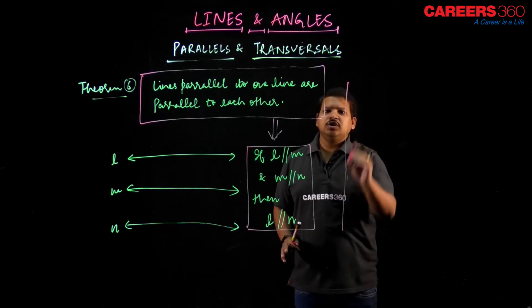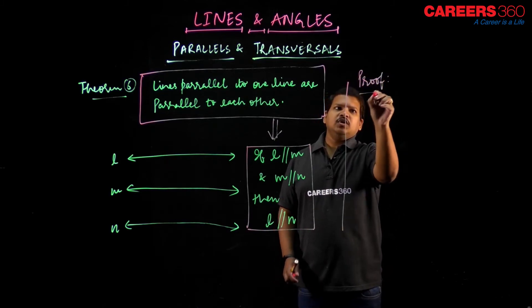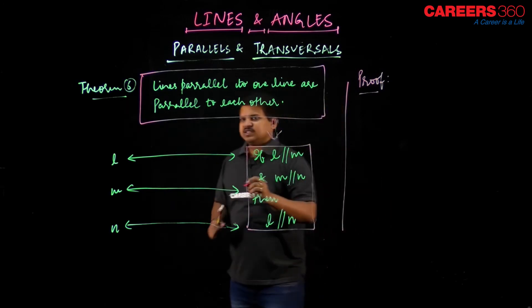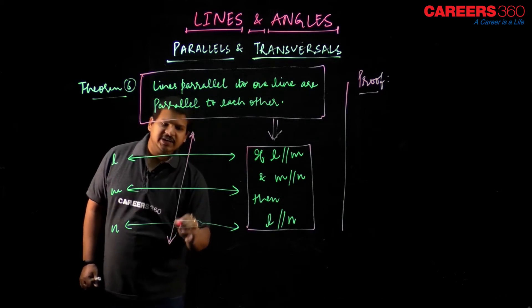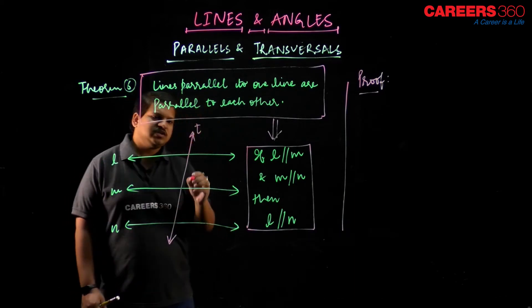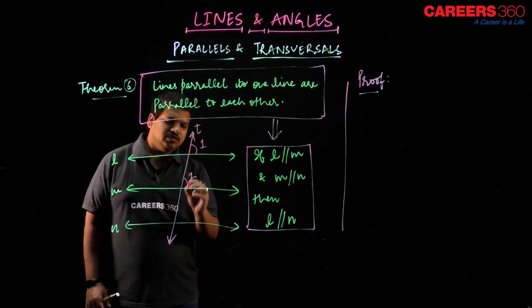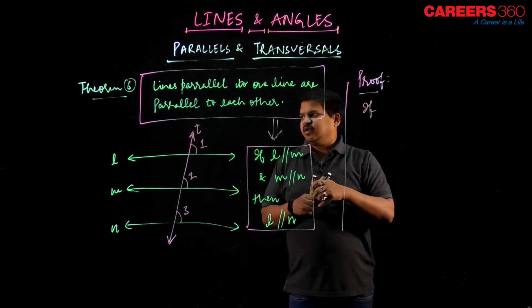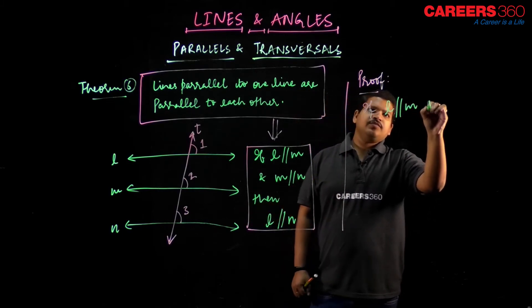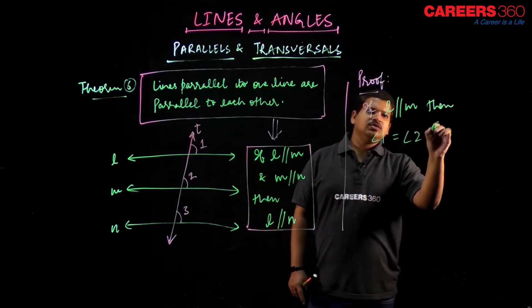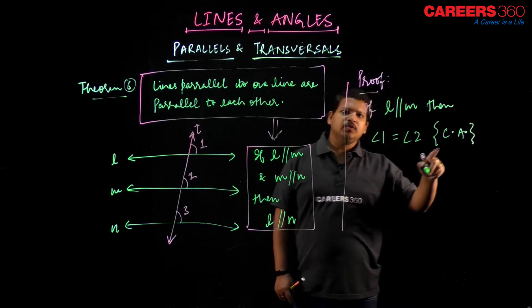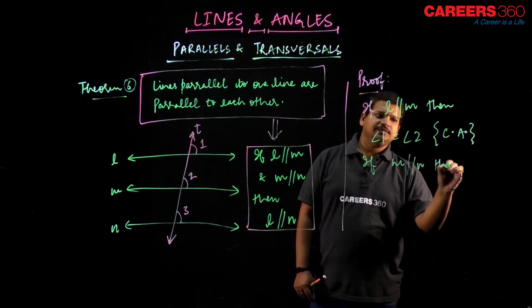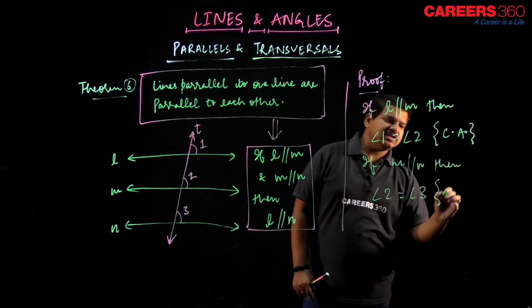For the proof, we draw a construction: a transversal T cutting across lines L, M, and N, forming angles 1, 2, and 3. Now, if L is parallel to M, then angle 1 equals angle 2 — because they are corresponding angles. Also, if M is parallel to N, then angle 2 equals angle 3 — again corresponding angles.